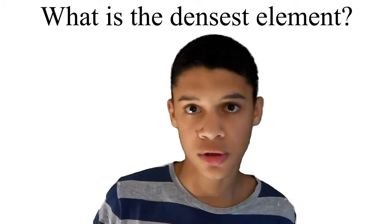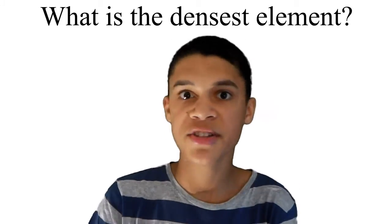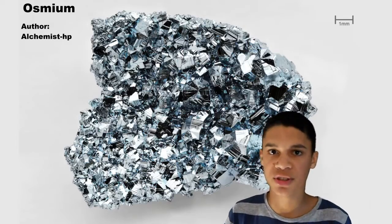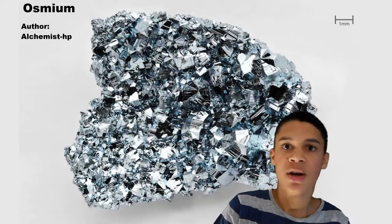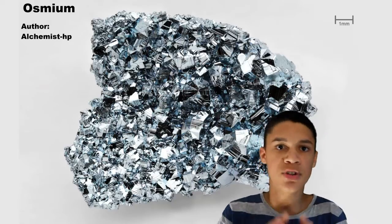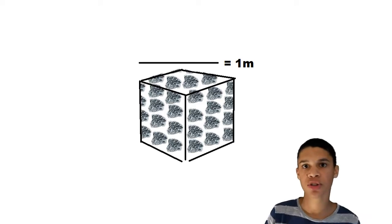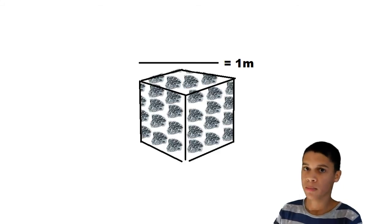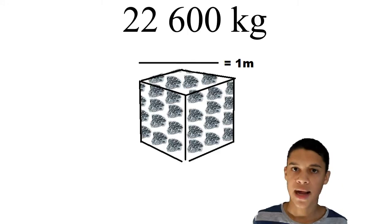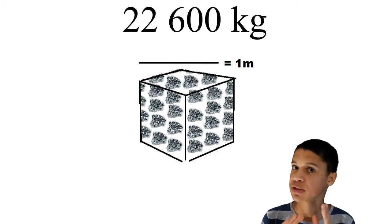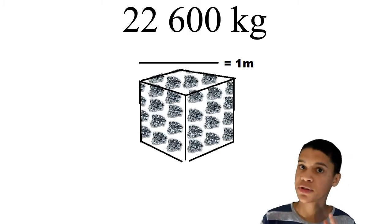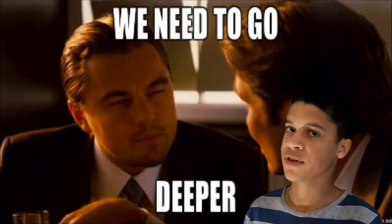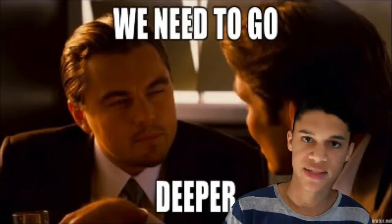So the densest thing in the world — well, first, what is the densest element? It turns out that the densest element that you can find in meaningful quantities on Earth is osmium. 1 cubic meter of osmium, which is a cube that is 1 meter by 1 meter by 1 meter, has a mass of 22,600 kilograms, which is around 22 tons. But this is nothing compared to another dense thing.